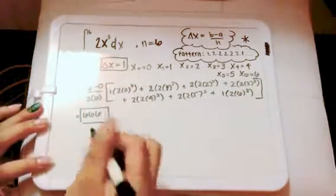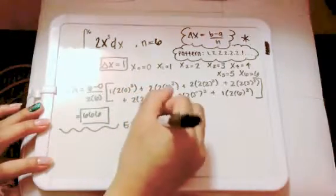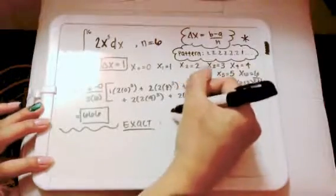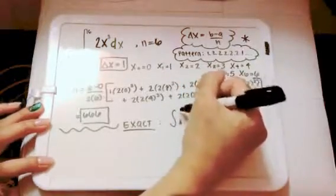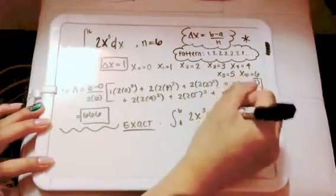Now we have to find the exact value, so once again, from 0 to 6, 2x cubed dx.